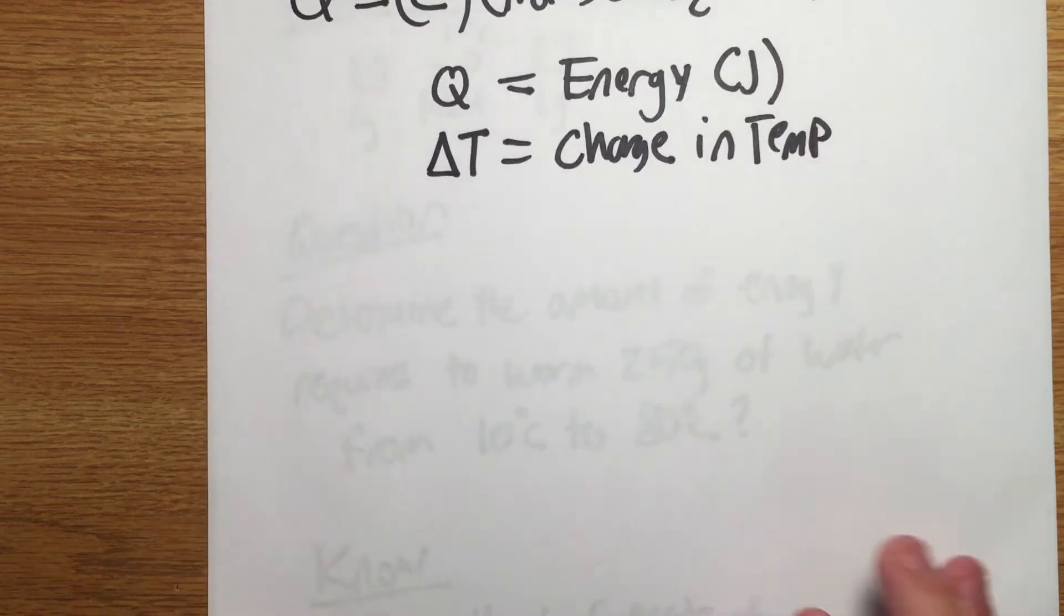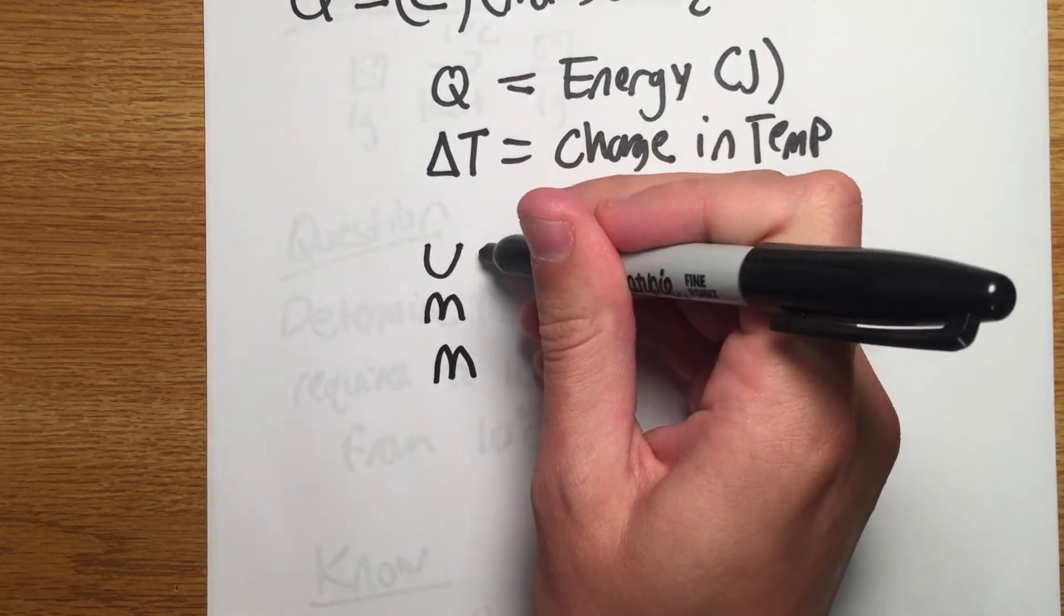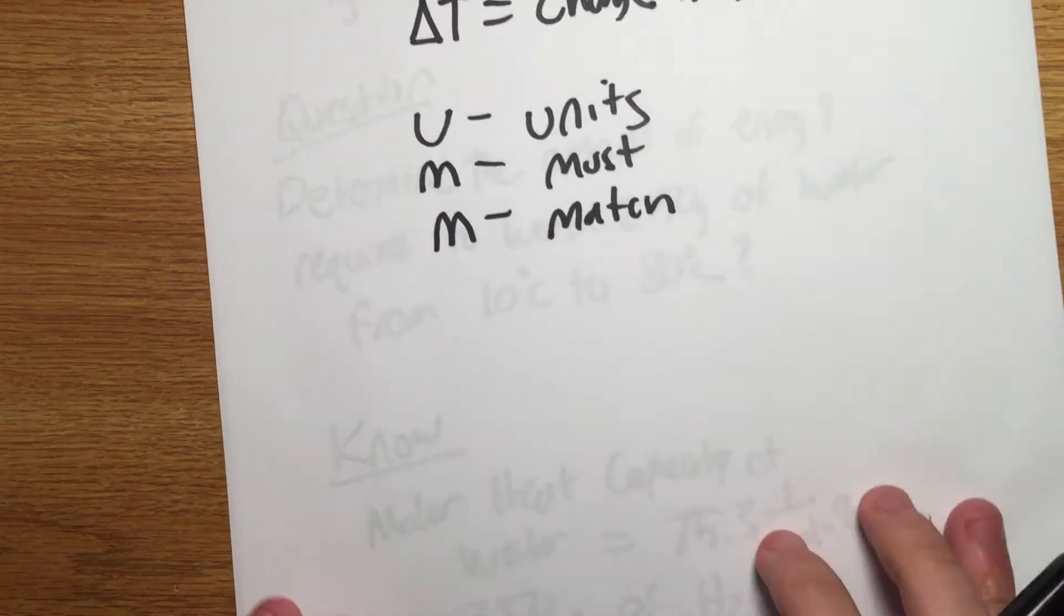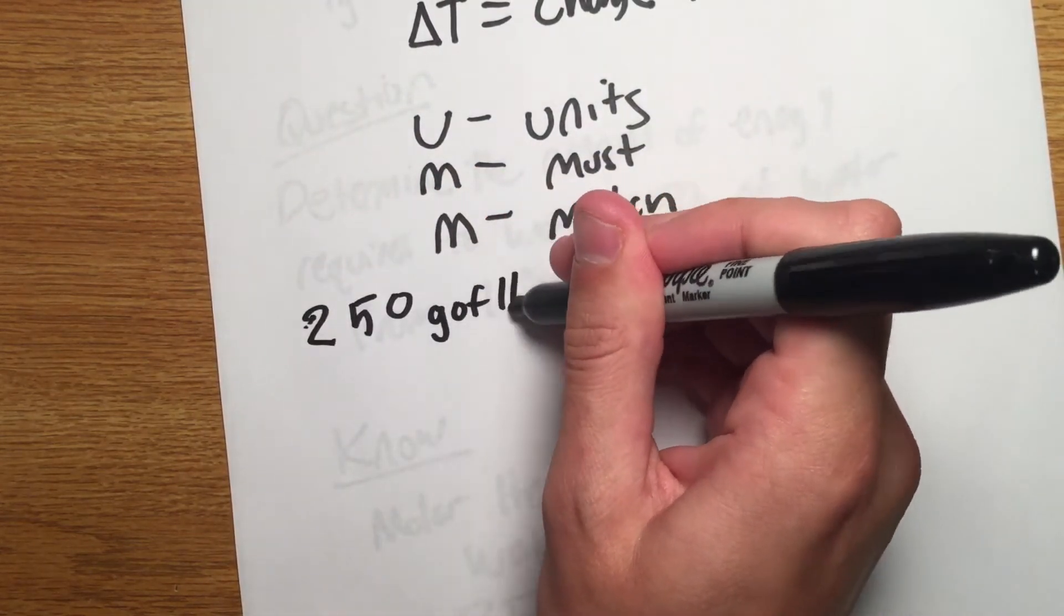Step 1: Remember, units must match. Therefore we need to convert the mass of water into the number of moles of water because the heat capacity of water is given in moles.